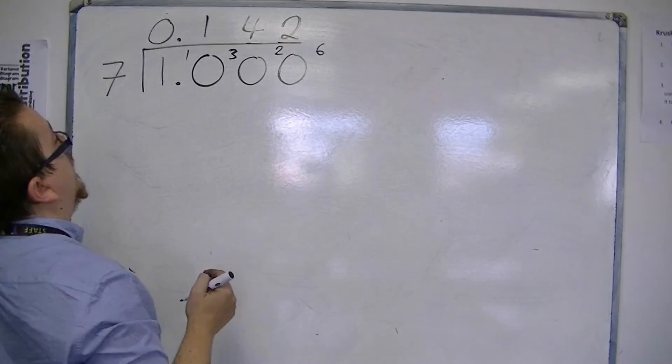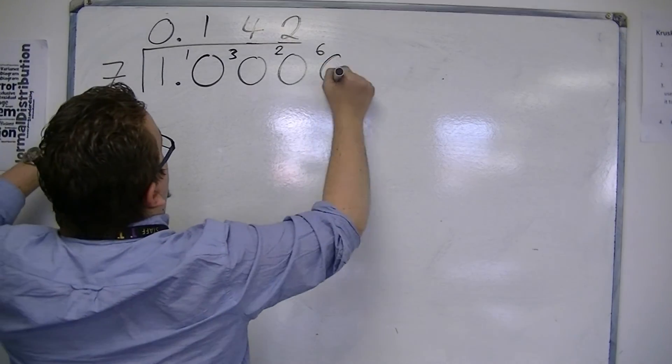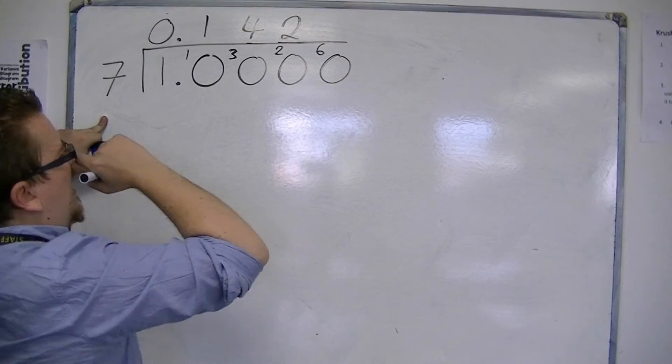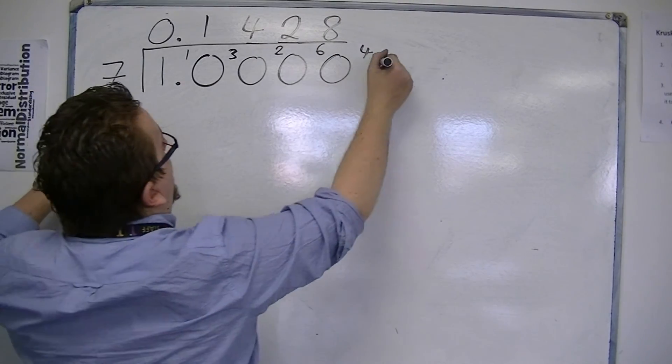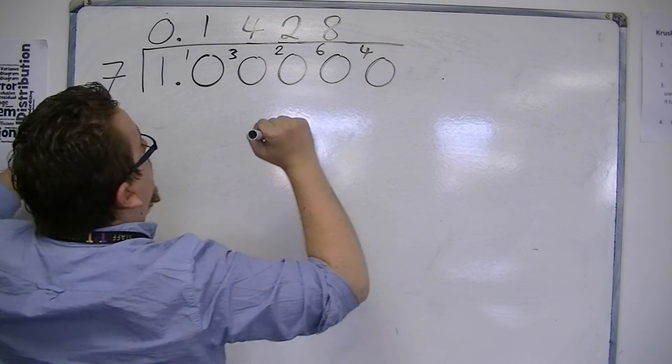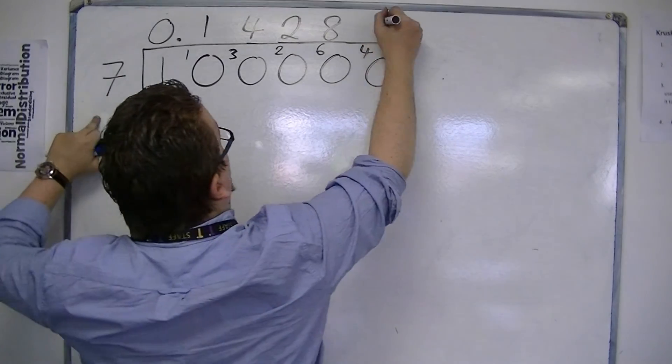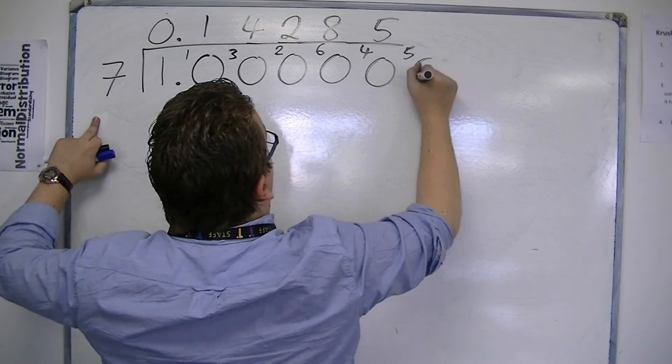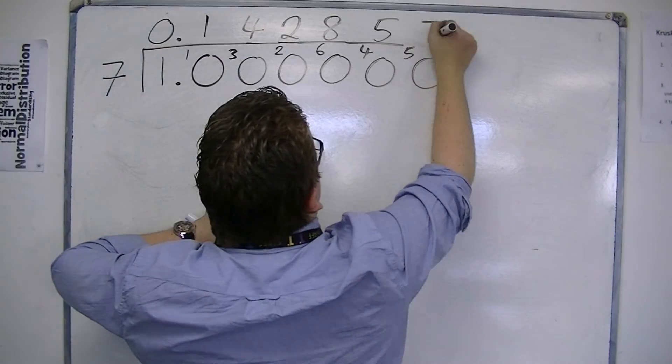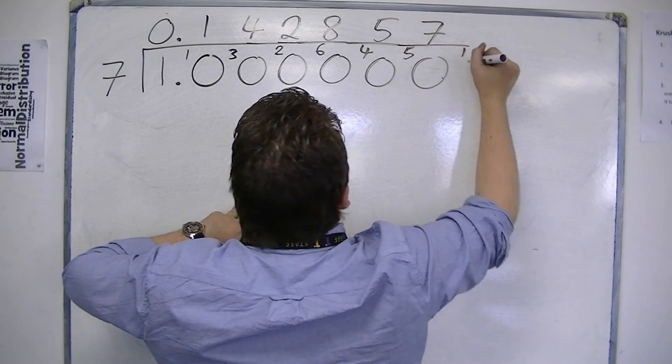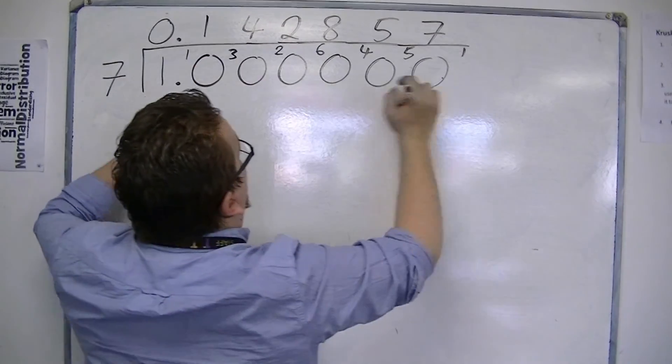7s into 60 go 8 with 4 left over. 7s into 40 go 5 with 5 left over. 7s into 50 go 7 with 1 left over. And then it goes back to this pattern.